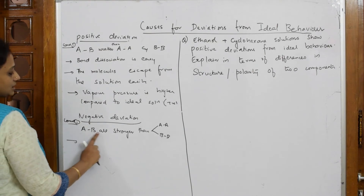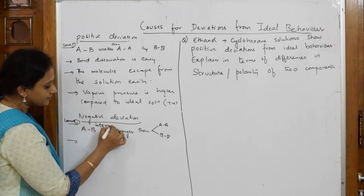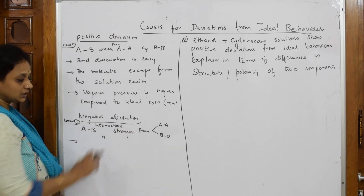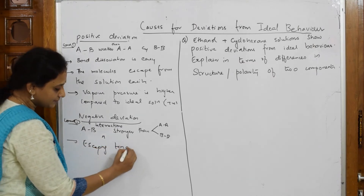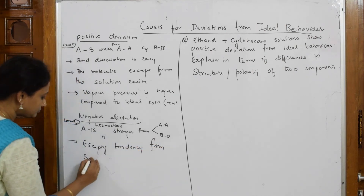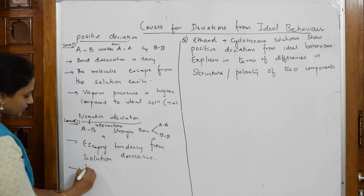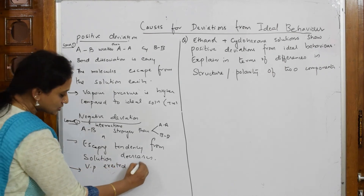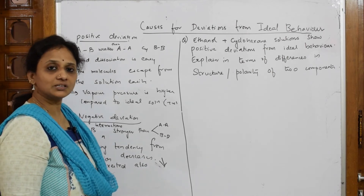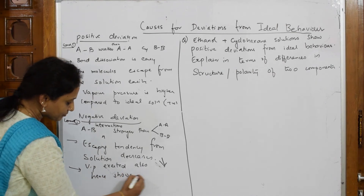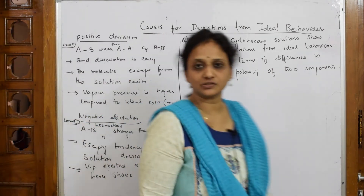Let us write this out: A-B interactions are stronger than A-A and B-B. If they are stronger, the escaping tendency from solution decreases. When escaping tendency decreases, vapor pressure exerted also decreases. When it is decreasing, plotting on the graph shows negative deviation — below the ideal solution. This is your reason for negative deviation.